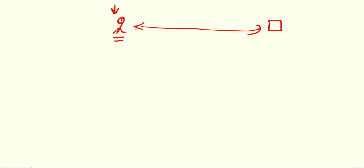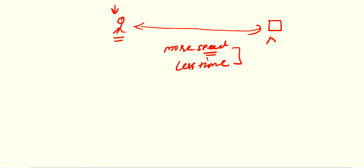For example, consider covering a fixed distance. If speed increases, the time taken will be less. So if speed is increasing, time reduces. The speed is increasing but the time is reducing — which type of variation is this? It is inverse variation, or indirect variation.